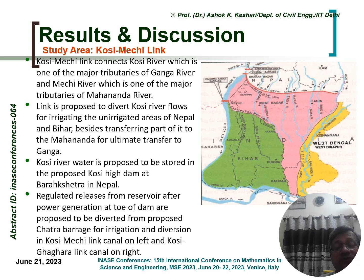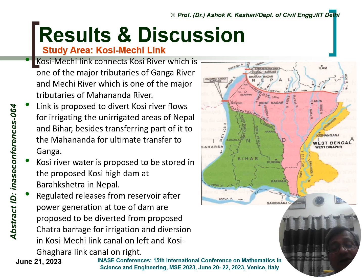The Kosi river is proposed to be stored in the proposed Kosi high dam at Baraj Chaitra in Nepal, ensuring water stays below dam capacity to avoid flood hazard. Regulated releases from the reservoir after power generation — using a concentrated fall-type power plant at the toe of the dam — generate electricity. Excess water is then diverted from the proposed Chaitra Barrage for irrigation and diversion through the Kosi-Mechi Link Canal on the left bank, where a barrage provides temporary storage of transferred water.